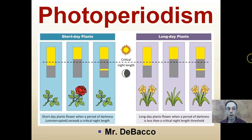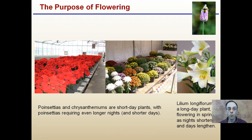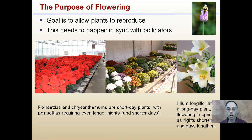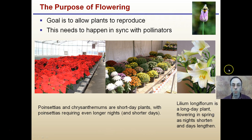Here we're going to investigate the topic of photoperiodism — the impact that day length can have on the flowering of plants. We have certain plants called short-day plants and certain ones called long-day plants. The purpose of flowering in the general sense is to allow plants to reproduce, and this needs to happen in sync with pollinators, because if plants aren't in sync with their pollinators, pollen transfer won't occur and the individual will not be able to survive.